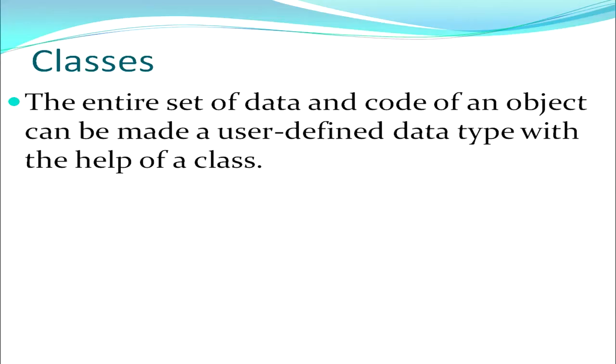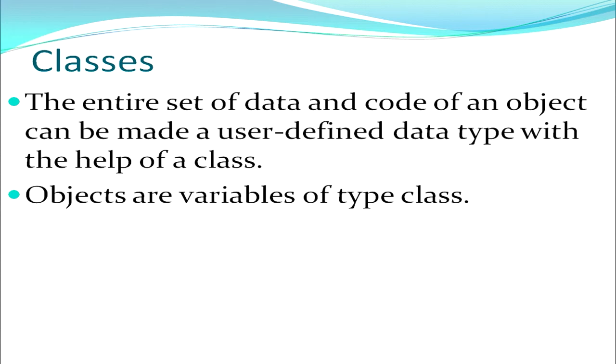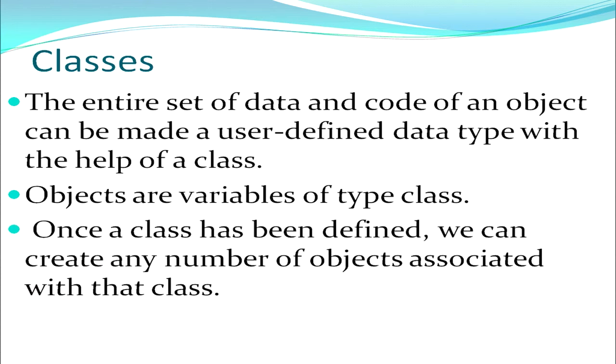After talking about objects, we talk about classes. A class is a user defined data type. It contains a set of data and a code — a function or set of functions which help to work with that data. Objects are variables of type class, or instances of classes. Once a class has been defined, we can create any number of objects associated with that class. Each object is given its own memory location and is independent of the others. So in spite of being created from the same class, they are still an entity in their own right.